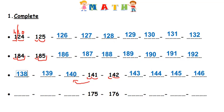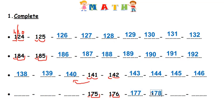Now I still have the last row. I have here one hundred seventy-five and one hundred seventy-six. So seventy-five, seventy-six, seventy-seven, seventy-eight, seventy-nine, eighty. I write one hundred seventy-six, one hundred seventy-seven, one hundred seventy-eight, one hundred seventy-nine. After seventy-nine it's eighty, so it's one hundred eighty.